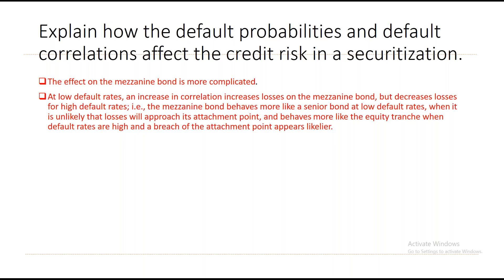At low default rates, an increase in correlation increases losses on the mezzanine bond; but at high default rates, it decreases losses. The mezzanine bond behaves more like a senior bond at low default rates — when it is unlikely that losses will approach its attachment point — and behaves more like the equity tranche when default rates are high and breach of the attachment point appears likely. This phrase can be confusing, but you need to remember and understand this concept carefully.